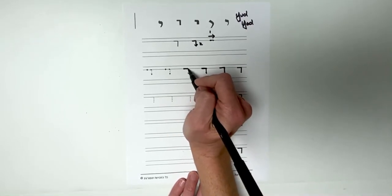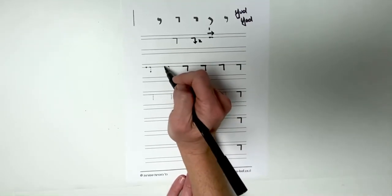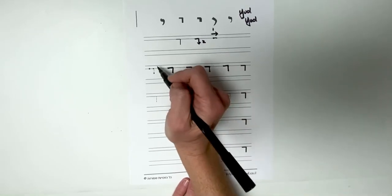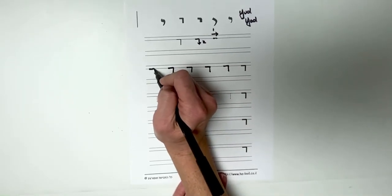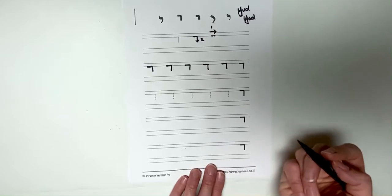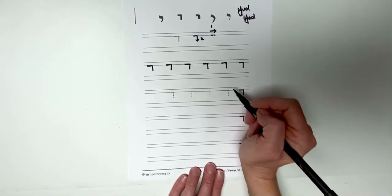Now yud you will see often at the beginning of words. So like I said, small but mighty in such important words as yeladim, which you hear us say often, meaning children.